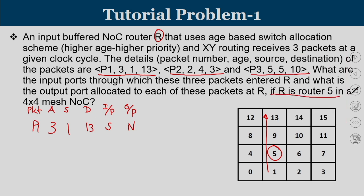For packet P2, its age is 2, source is 4, and destination is 3. A packet from 4 to 3 typically travels in that direction. With respect to router 5, packet P2 arrives through the west input port and wants to go through the east output port — that is the direction since we follow XY routing.